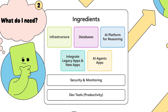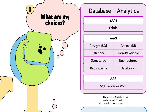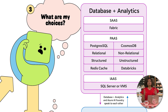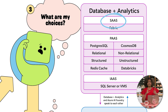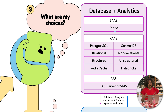Let's start with your choices from the database perspective, because data is one of the biggest ingredients you need to begin with for any AI application. You've got three options: software as a service — the easiest option; platform as a service, where you have a little more control; and infrastructure as a service, where you deploy and manage the entire database yourself.